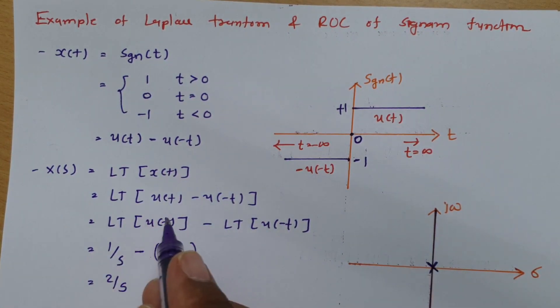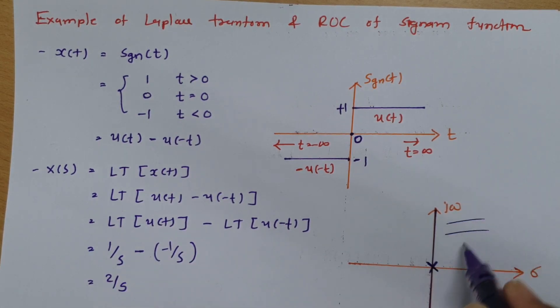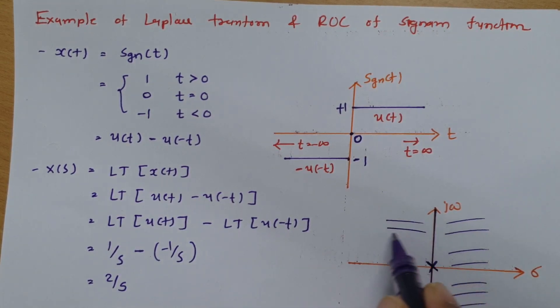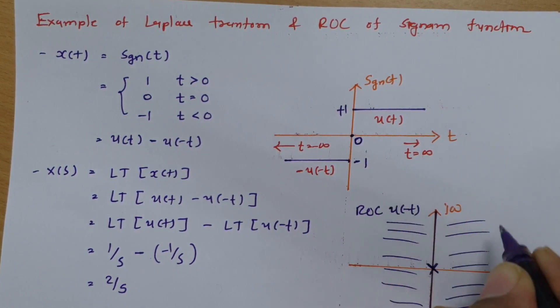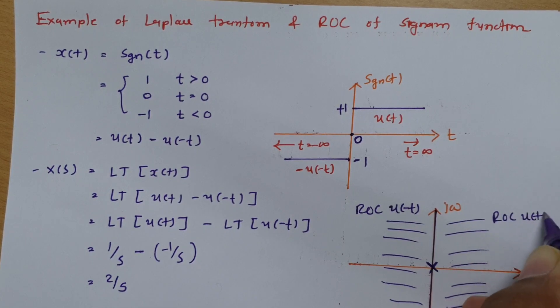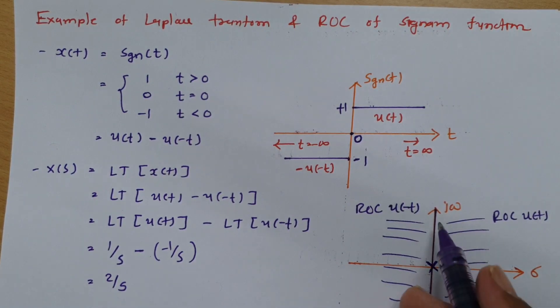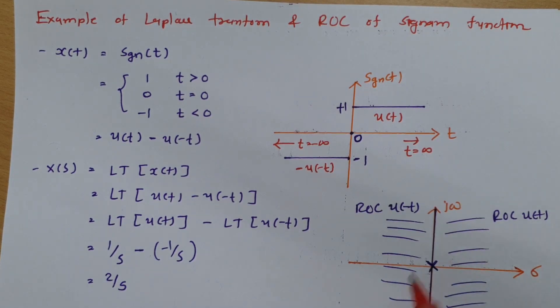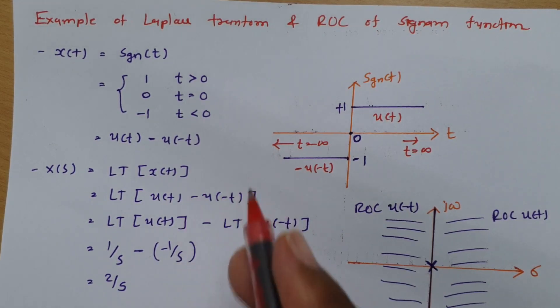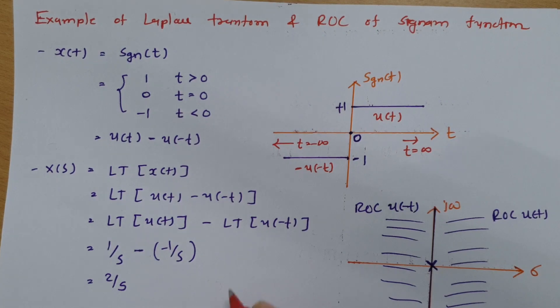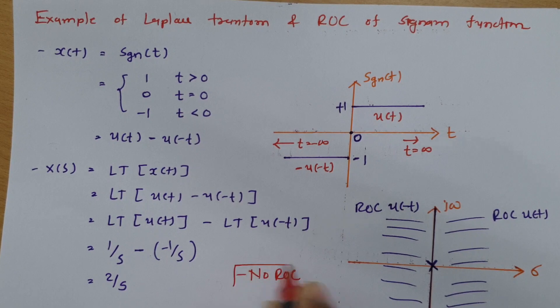Now for first signal this is right sided signal u of t so ROC will be in this direction for u of t and for minus u of minus t ROC will be in this direction. So ROC for minus u of minus t that is in this direction and ROC for plus u of t that is in this direction. So you will be observing there is no common ROC. So as there is no common ROC one can say signum function is not having any ROC. So no ROC is here for signum function as there is no common ROC for these two signals.